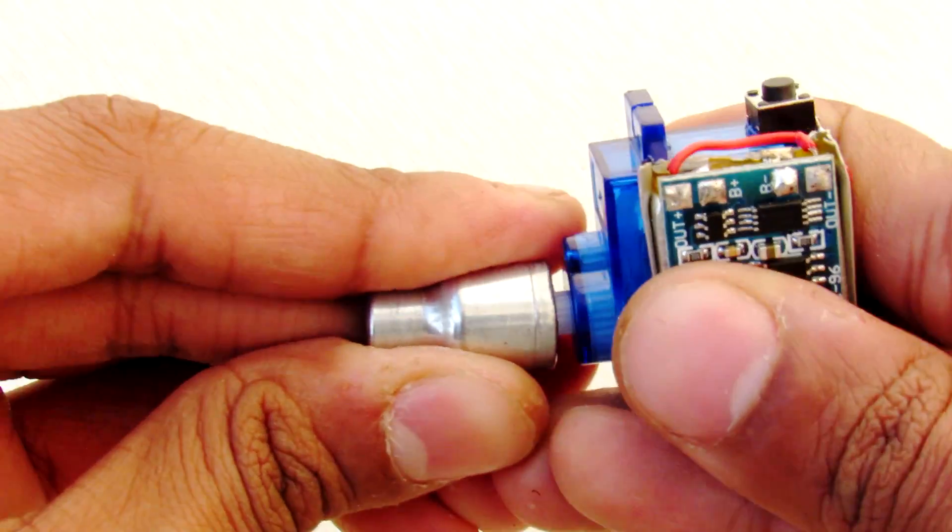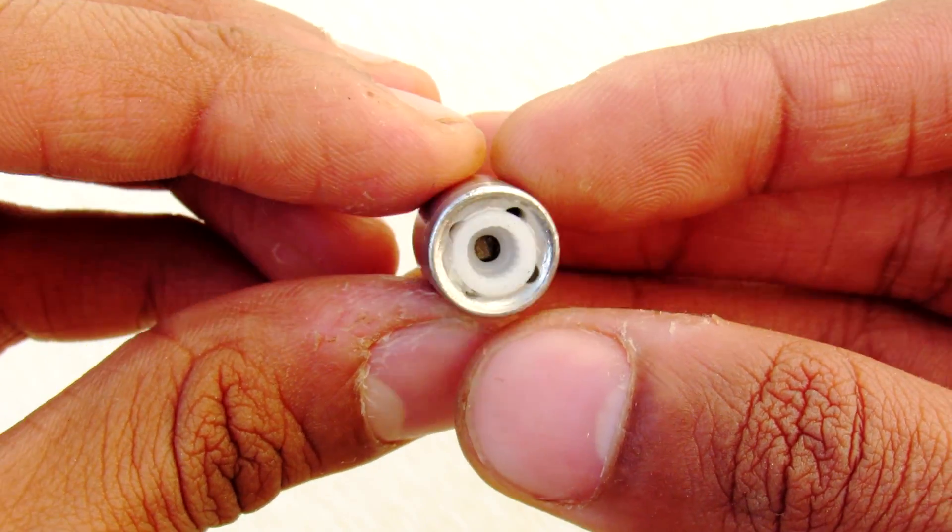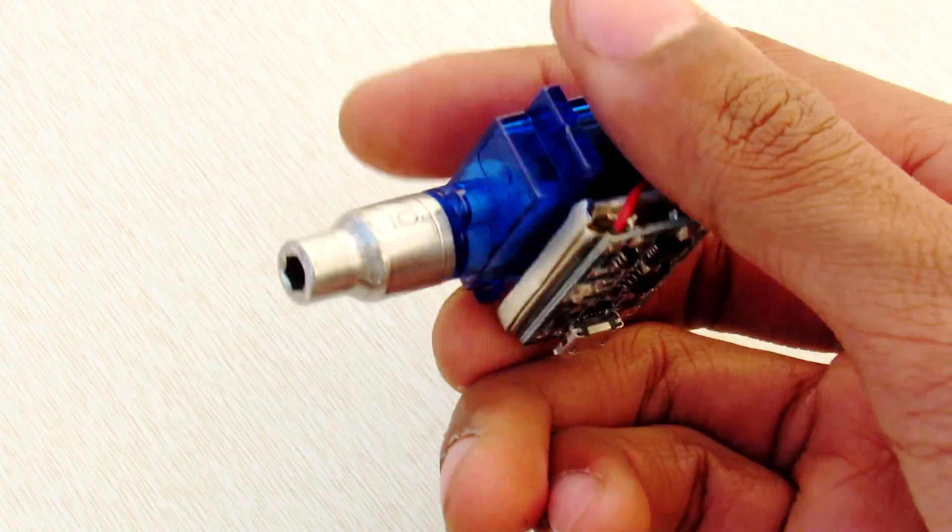Now let's make a quick swappable bit attachment by cutting this plastic round and permanently gluing it into the attachment, and it's done.